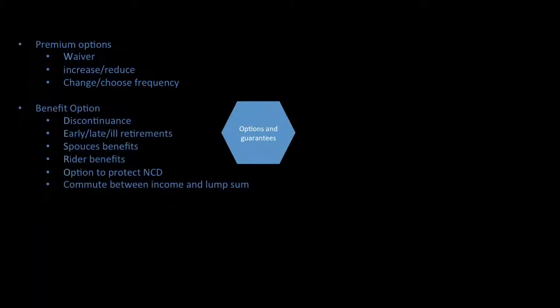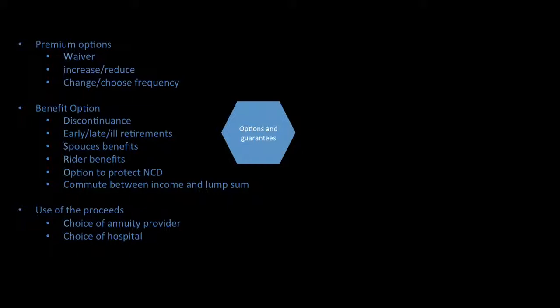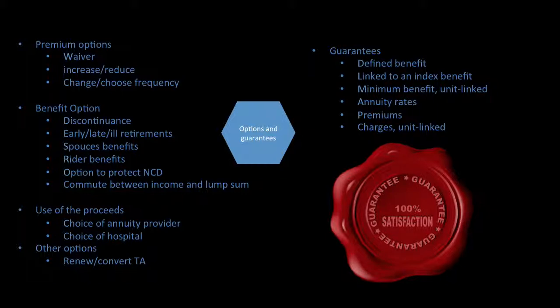For options and guarantees: premium options allow the policyholder to waive, increase, reduce, or change the frequency of premiums. Benefit options include discontinuing, early or late retirement, sparse benefits, rider benefits, options to protect a no-claims discount, and changing between income or a lump sum. Policyholders may also use proceeds to choose an annuity provider or choose a hospital. All of this is great but adds to complexity. Guarantees include defined benefits linked to an index, minimum benefits, unit-linked annuity rates, and premium charges — making the product more marketable but more complicated and more risky.